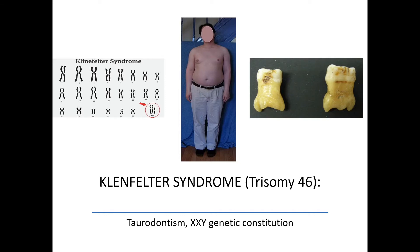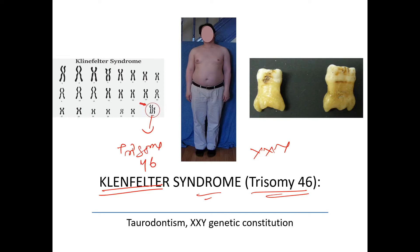This is Klinefelter syndrome — the spelling is wrong here, please don't mind. It involves trisomy, with the karyotype being XXY, so trisomy of 46. This can come in your exam. The symptoms include enlarged breasts in a male person — you can see in this person he has enlarged breasts — he is suffering from Klinefelter syndrome.